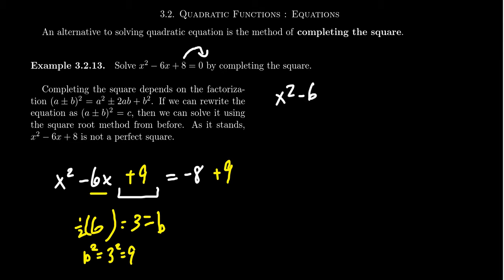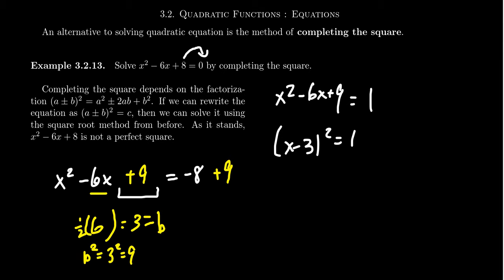This gives us x squared minus 6x plus 9 on the left-hand side. On the right-hand side, you get negative 8 plus 9, which is equal to 1. The left-hand side — you'll recognize x squared minus 6x plus 9. The whole point of adding the 9 was that now the left-hand side is a perfect square trinomial. It'll factor as (x minus 3) squared. So you end up with (x minus 3) squared equals 1. Notice where did this x minus 3 squared come from? It's going to be a perfect square because that's what we were trying to do — we're trying to complete the square here.